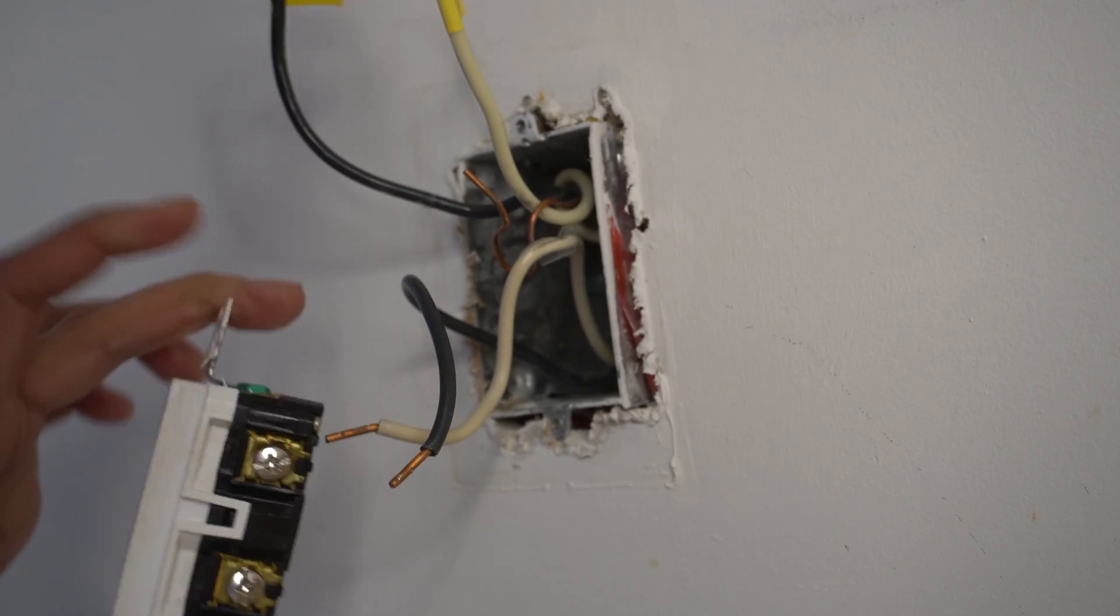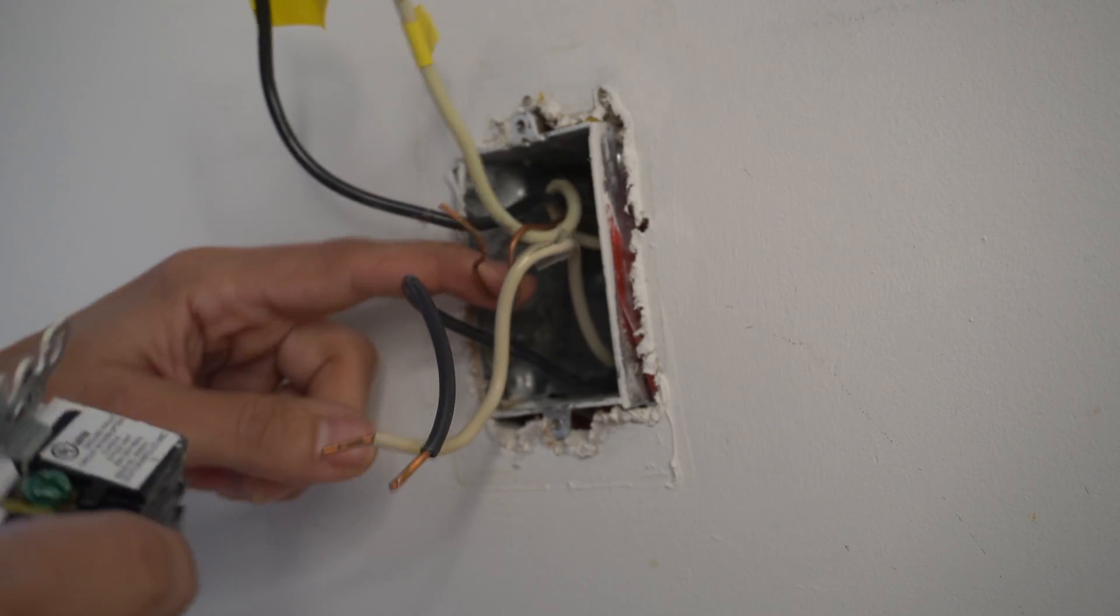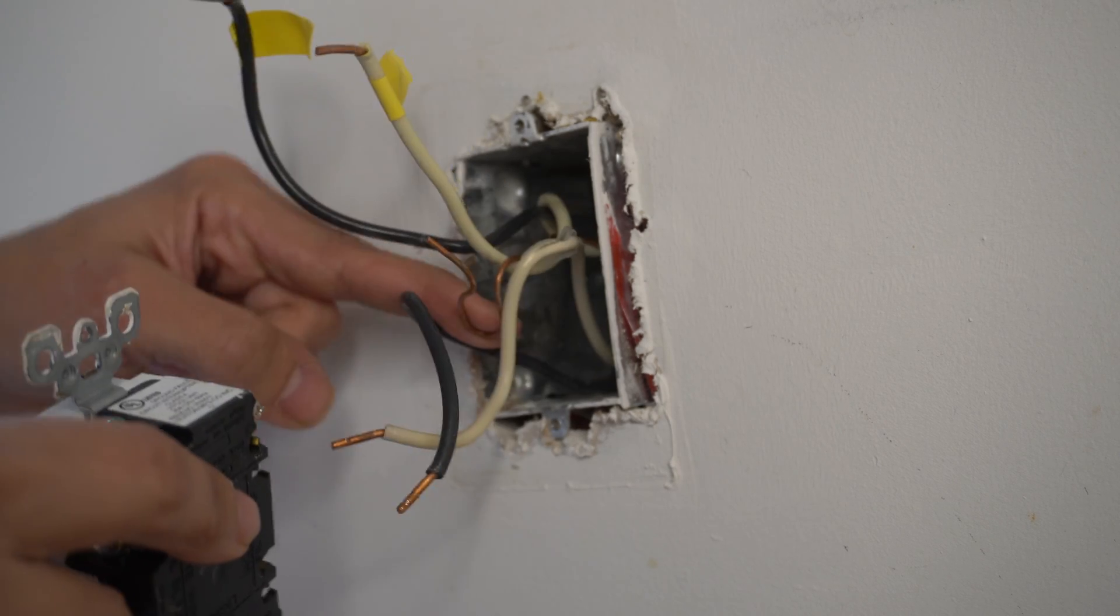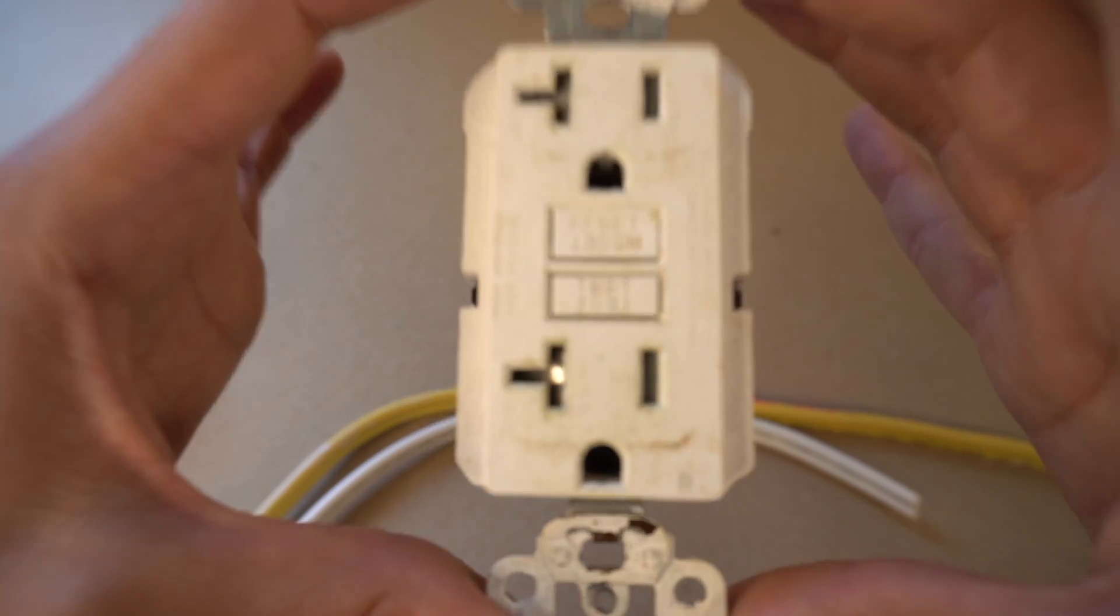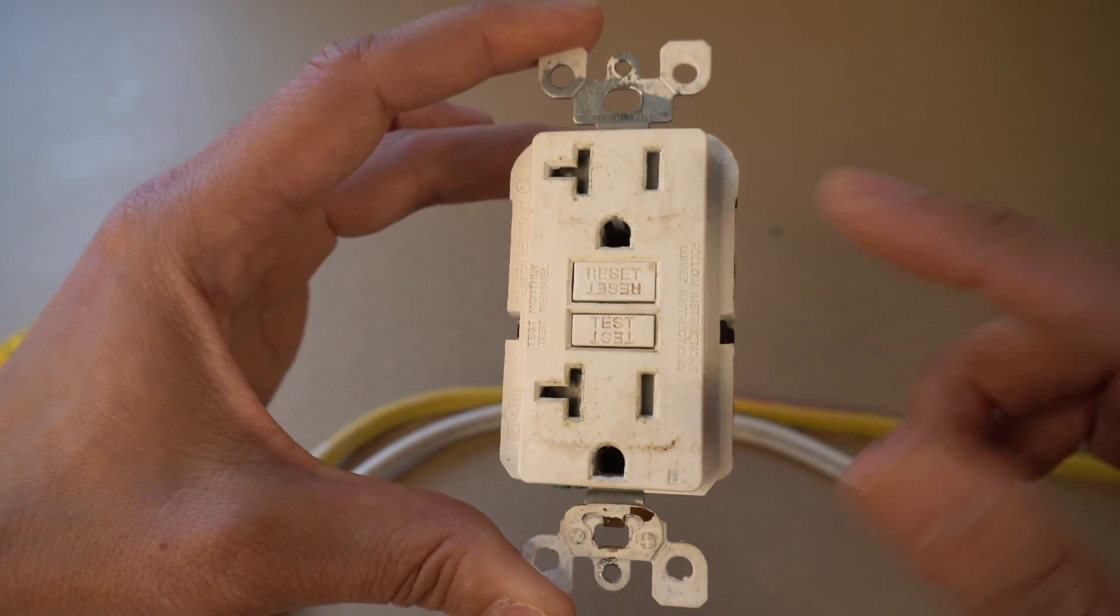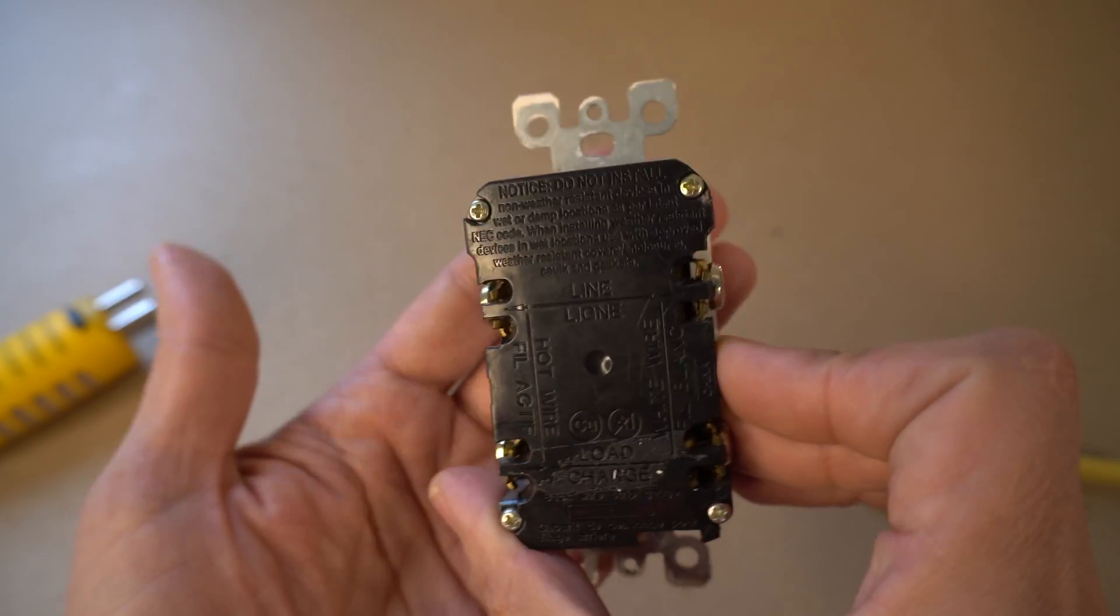Now this ground wire should have been attached here. It came loose so we're going to make a better connection this time around. Once you've removed your receptacle, this is the old one I removed. Flip it over to the back side.